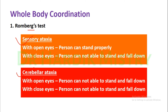In cerebellar ataxia, once the cerebellum is damaged, the person cannot stand either with open eyes or with closed eyes. So that is the difference between sensory ataxia and cerebellar ataxia. To summarize: ataxia means lack of coordination.